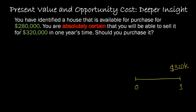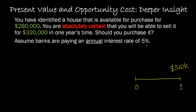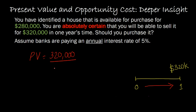The house costs $280,000 today. So the question is: if the banks are paying an annual interest rate of 5%, would you make this investment? The way we approached this problem is that if our house is going to generate a $320,000 cash flow one year out, then while we are waiting for this to come in, we're losing out on the opportunity to earn 5% elsewhere in the banks. And so the present value of this $320,000 is 320 divided by 1.05, which is 304,762.